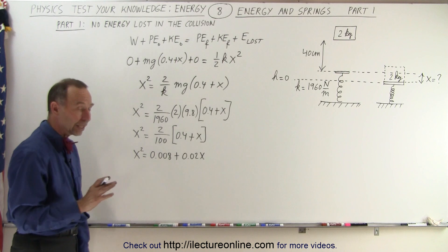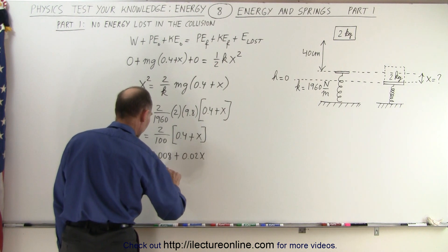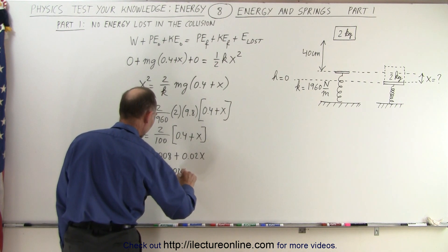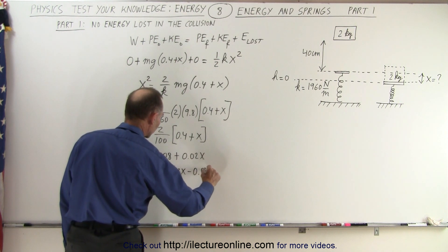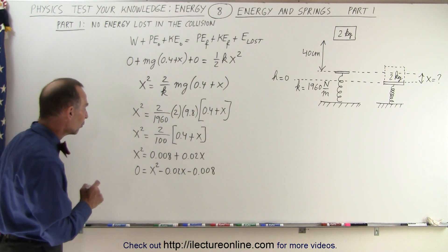And finally, writing all that on a single side with a zero on the other side, 0 is equal to x squared minus 0.02x minus 0.008. And now we have to solve that quadratic equation for x.